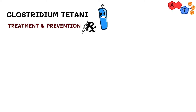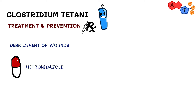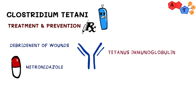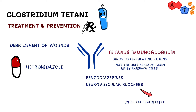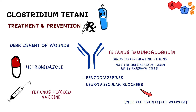Treatment of Clostridium tetani includes debridement of any wounds present. The antibiotic usually given is metronidazole. Tetanus immunoglobulin can also be given, which binds the circulating toxin but not the one already taken up by Renshaw cells — and that's the reason we give benzos or neuromuscular blockers until the toxin effect wears off. Nowadays, tetanus rarely happens due to the development of the tetanus vaccine, which is a toxoid vaccine.